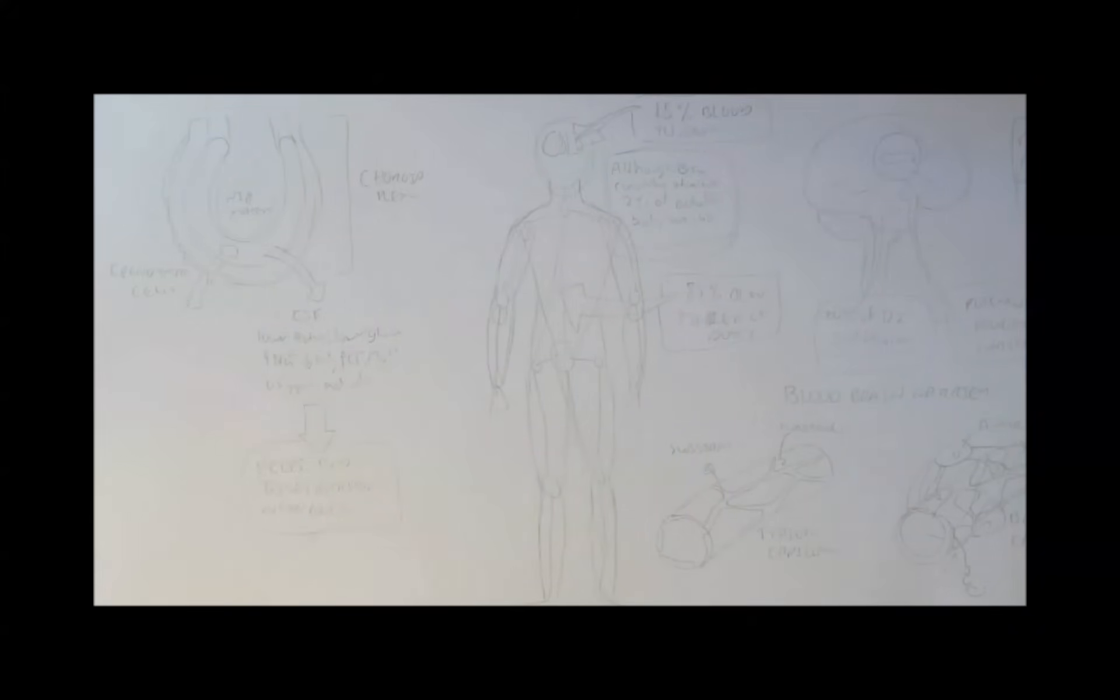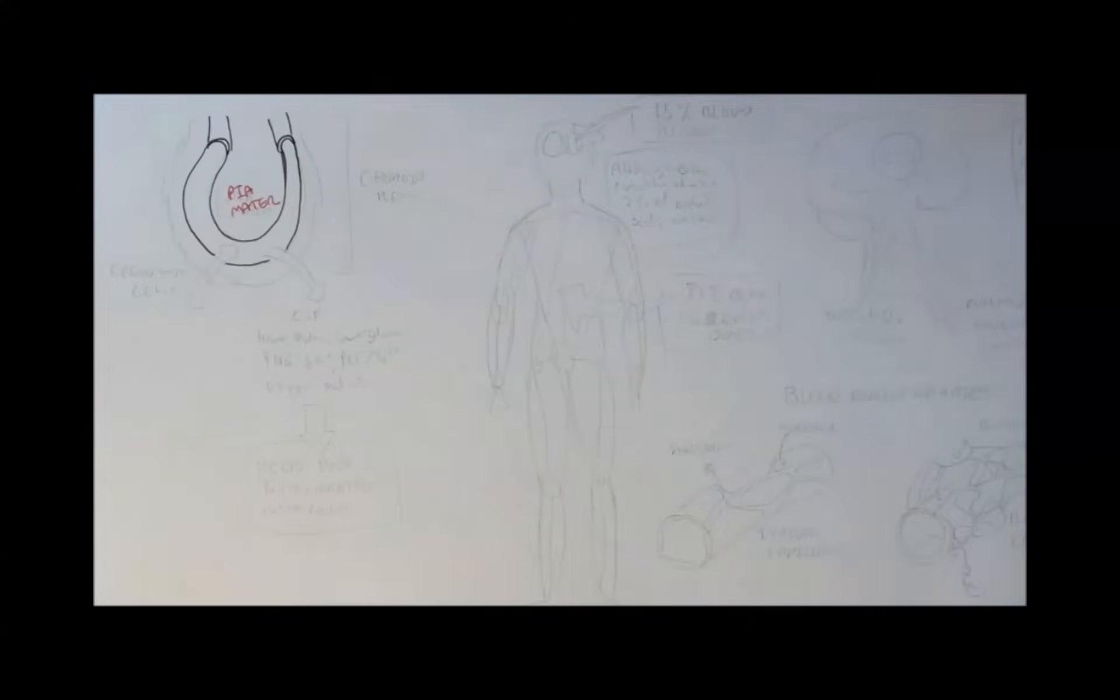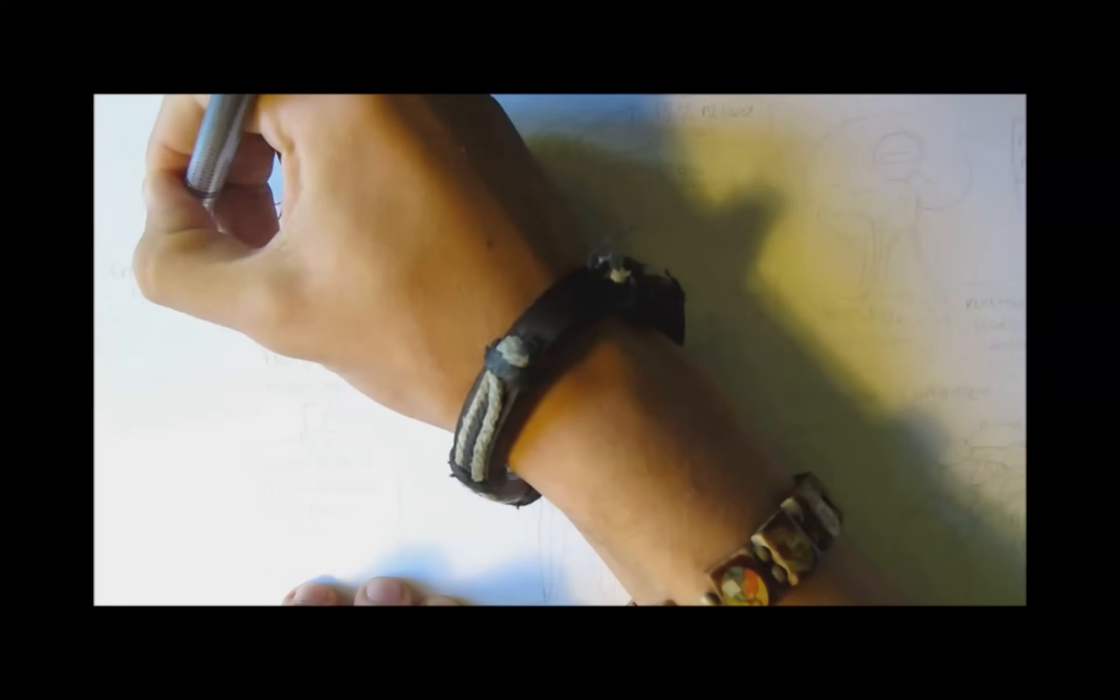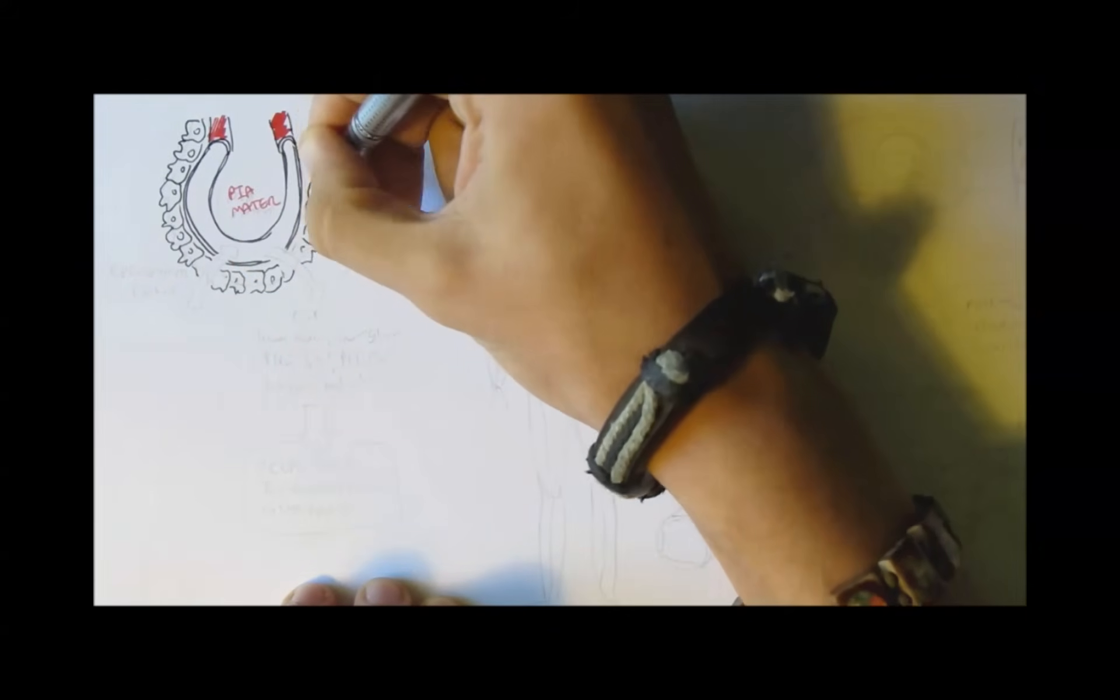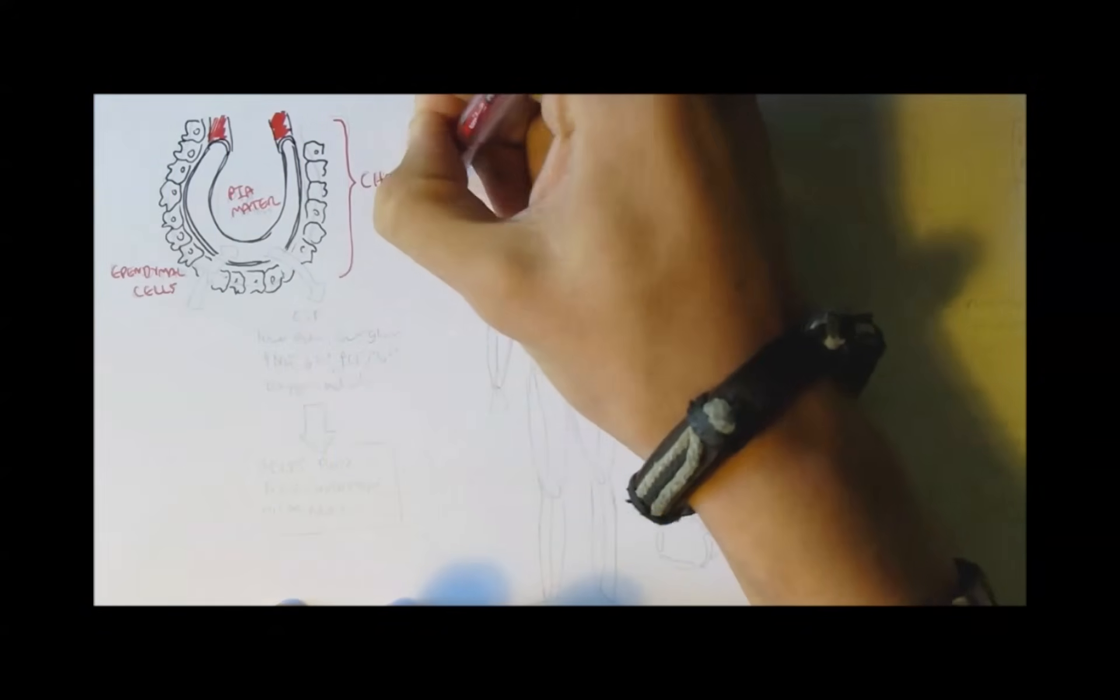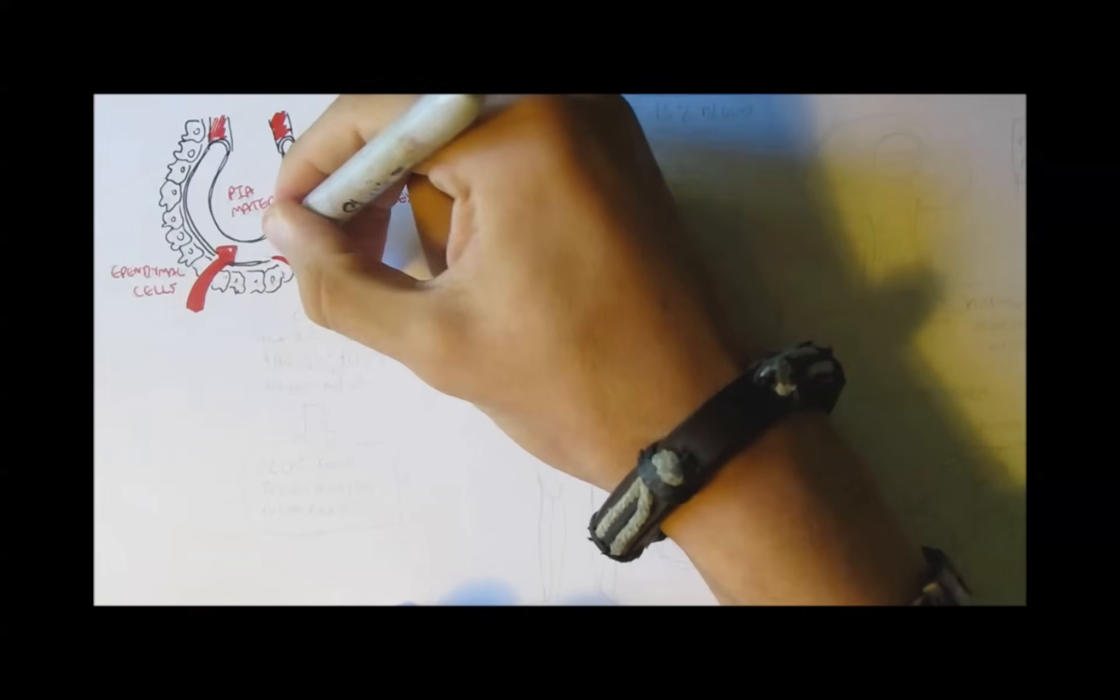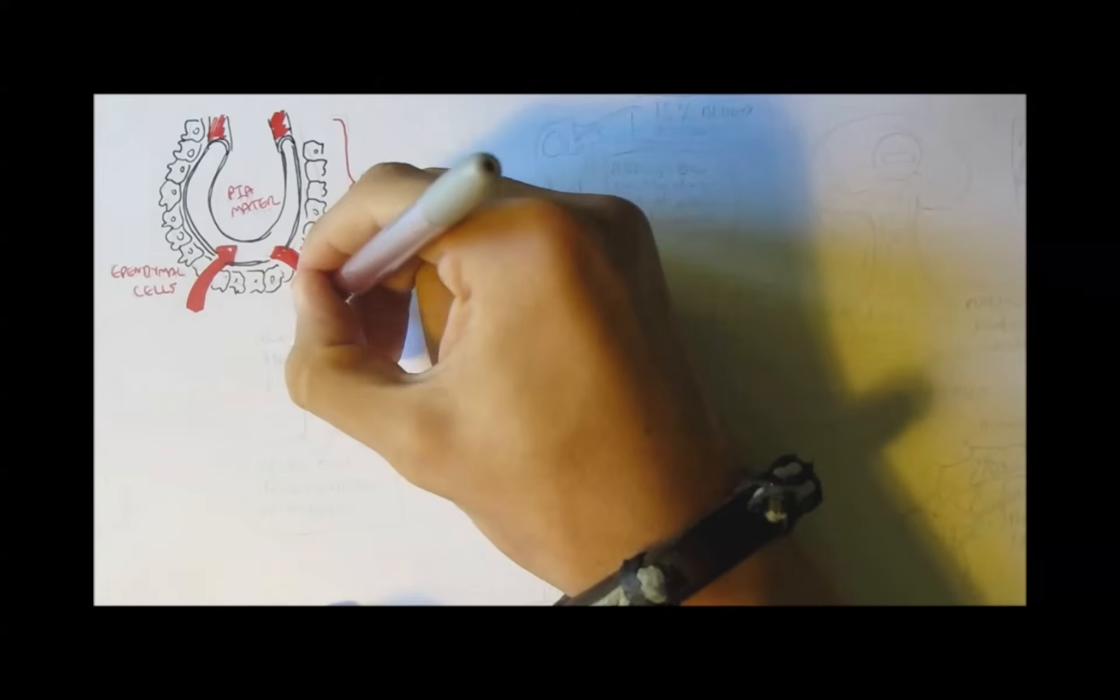So, here is the blood vessel of the choroid plexus, and surrounding it are the ciliated cuboidal ependymal cells. Normal fluid containing no nutrients is absorbed into the choroid plexus, and then it will get transformed by the ependymal cells to produce CSF.